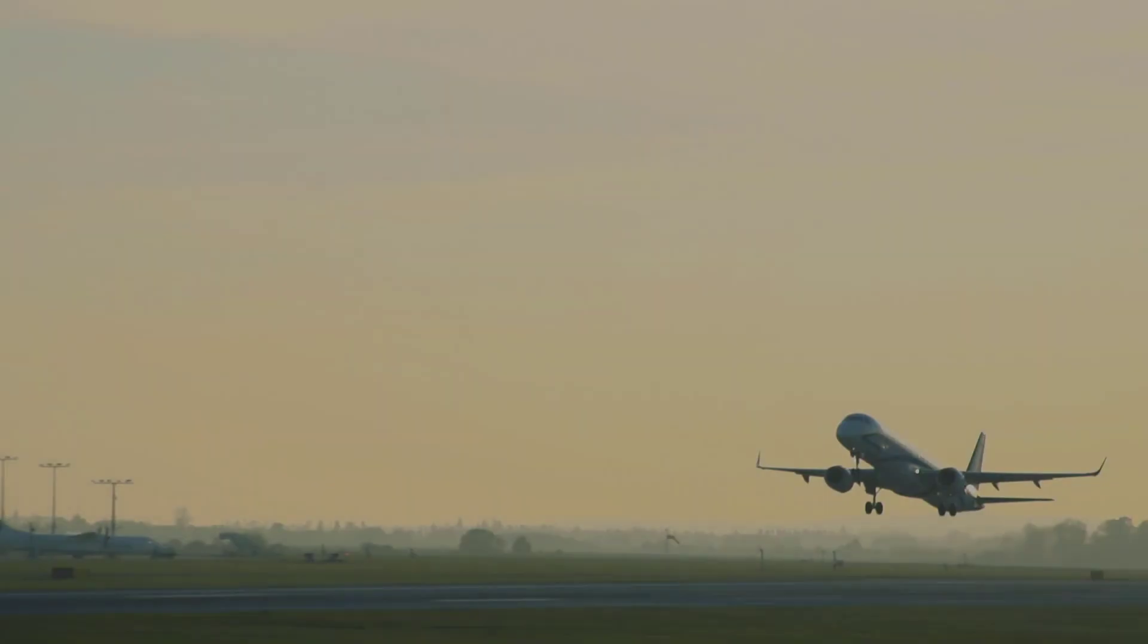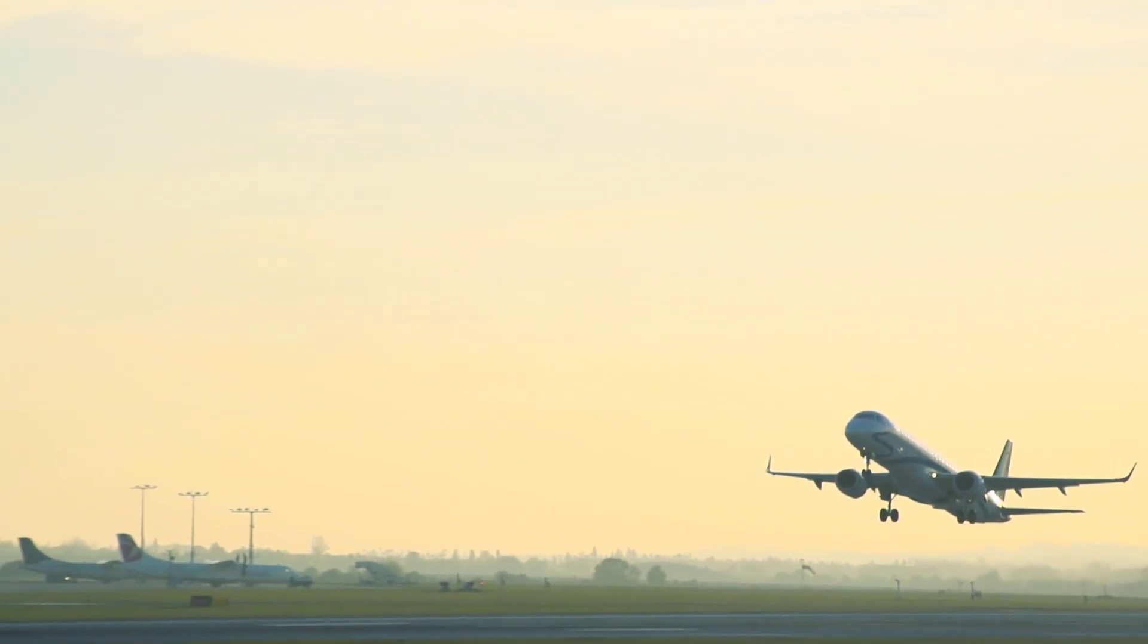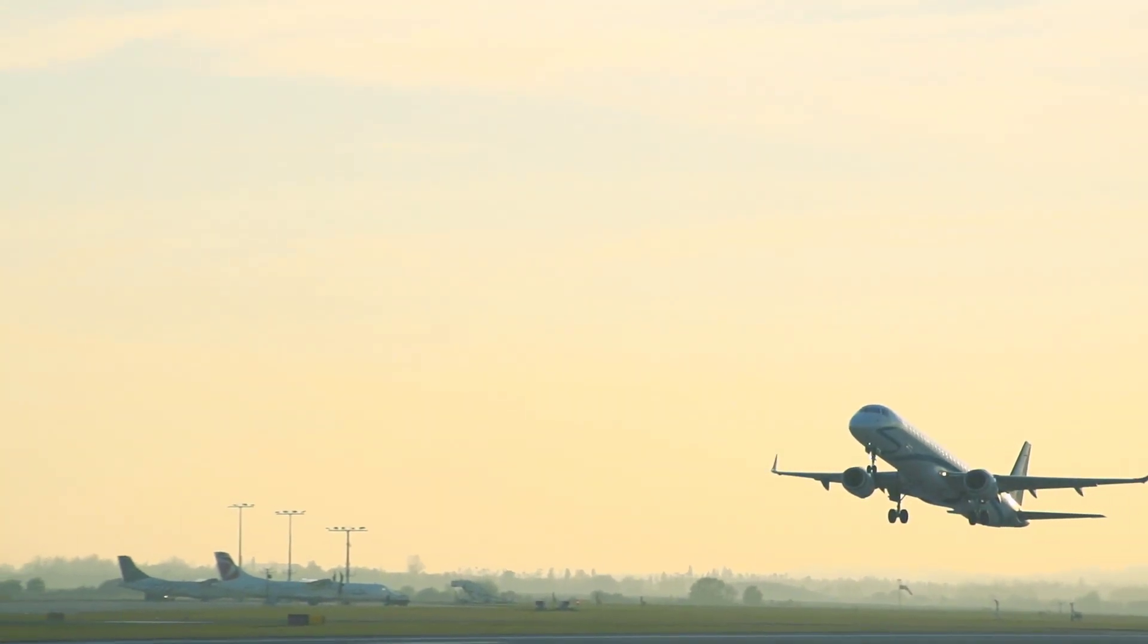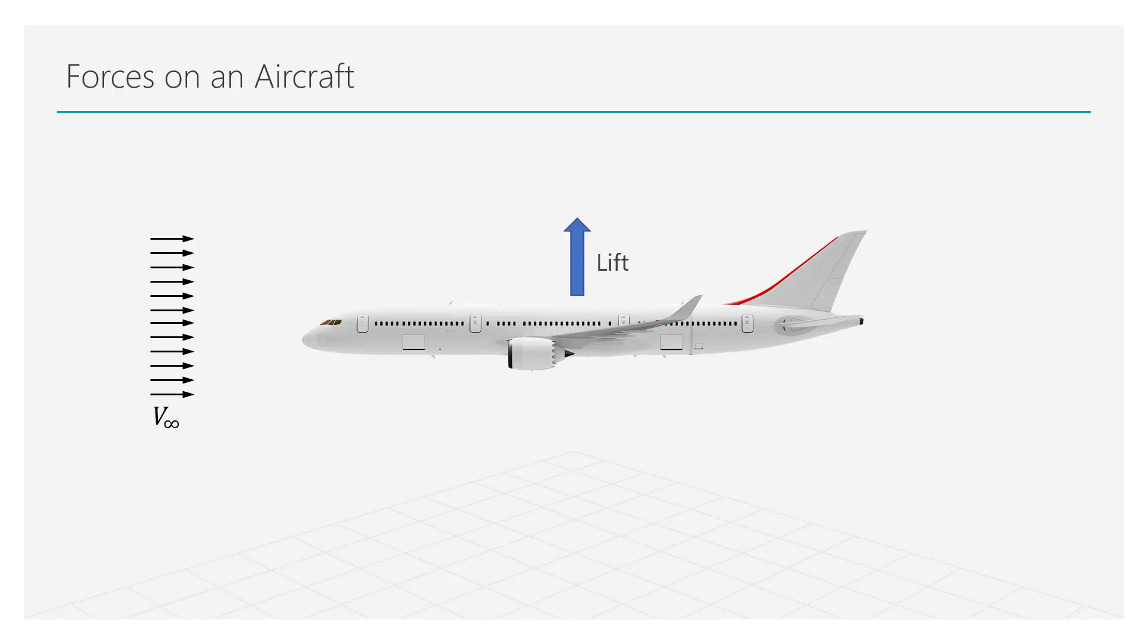In fluid dynamics, the general convention is to describe the forces acting on the body in terms of lift and drag. Lift and drag are easily understood if we consider a flying airplane. Lift force is nothing but the force that makes the airplane stay afloat in the air. More formally, it is the force that acts normal to the flow direction, balancing the gravitational force exerted on the body.